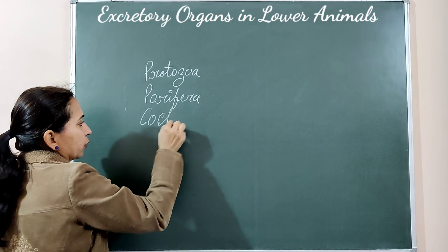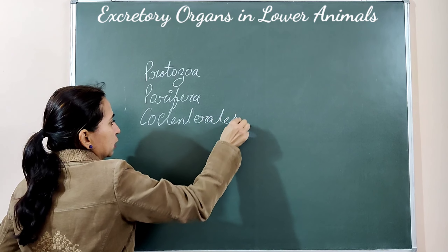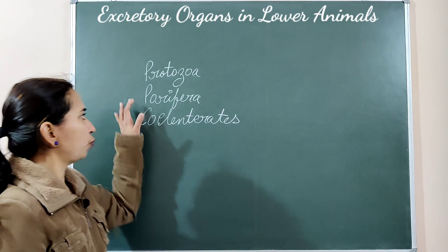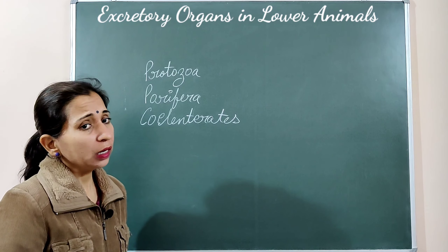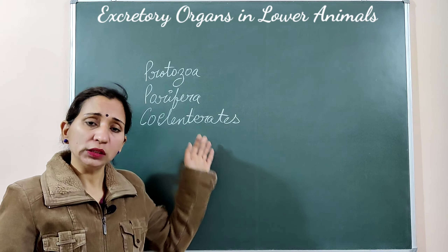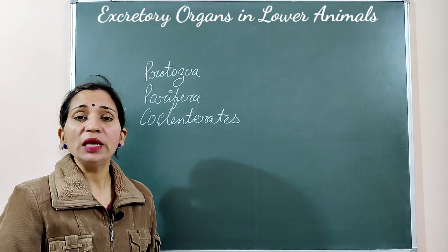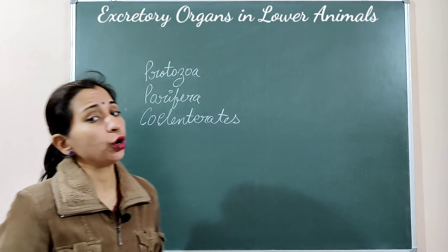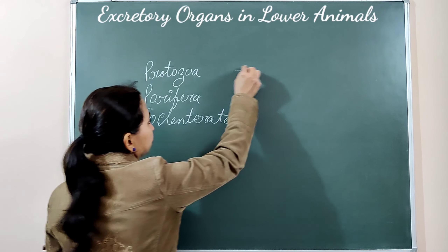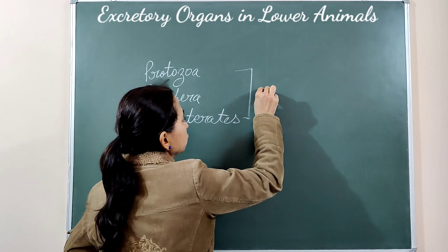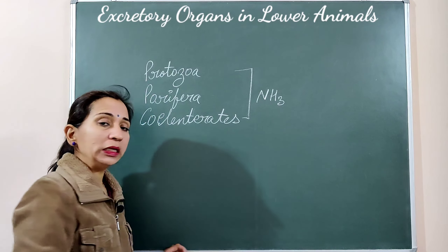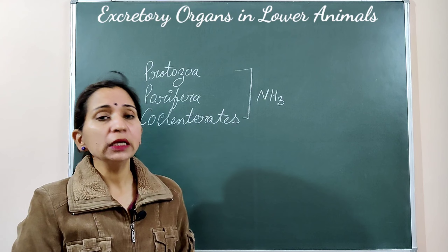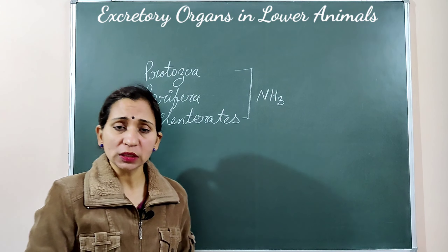Starting with the animal groups, we find Porifera, and after Porifera the next group is Coelenterata. These are different groups of animals. If we talk about all three — Protozoa, Porifera, and Coelenterata — these do not have any specific excretory organ in their body. All three of these phyla excrete their nitrogenous waste in the form of ammonia, which means they are ammonotelic. They excrete their nitrogenous waste through their body surfaces by diffusion.